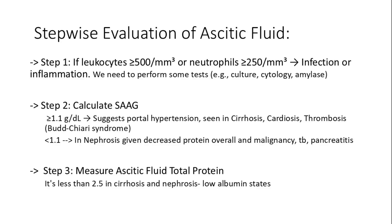In step 3, the total protein concentration in the ascitic fluid is measured. In cirrhosis and nephrotic syndrome, the protein level is typically less than 2.5 g/dL, reflecting low protein states due to impaired synthesis or increased losses.